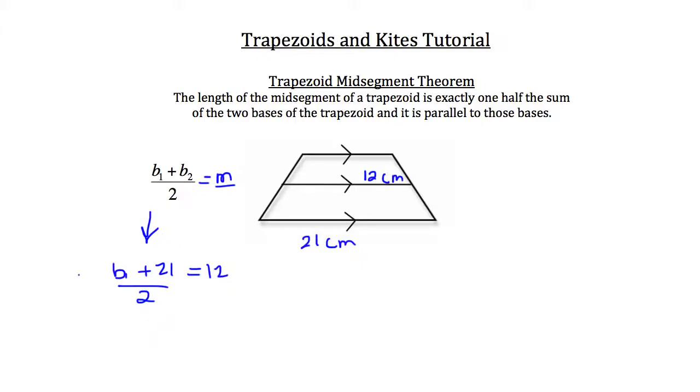So what we want to do is multiply both sides by 2, and that'll cancel the 2 off the left. And we'll have b1 plus 21 is equal to 12 times 2, which is 24. So we can now subtract 21 from both sides of the equation. The 21s will cancel on the left, and we'll have b1 is equal to 24 minus 21, which is 3. So the top of this trapezoid would have a length of 3 centimeters.